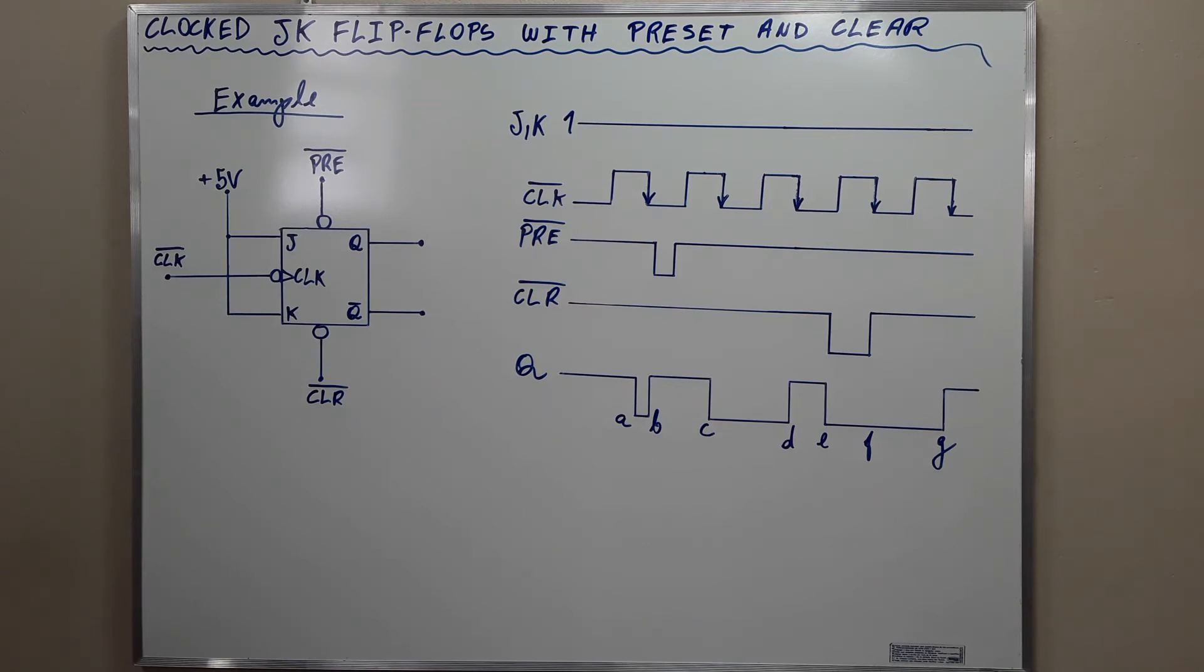Likewise, the negative going transition of the clock at point D will toggle the output back to high.